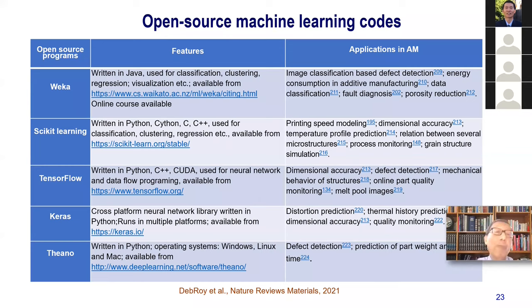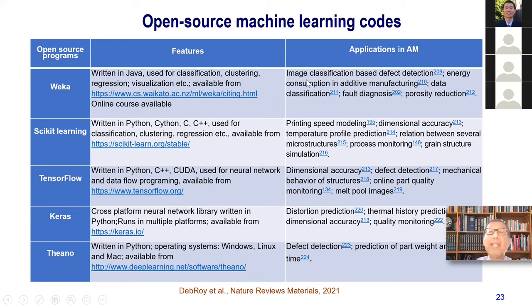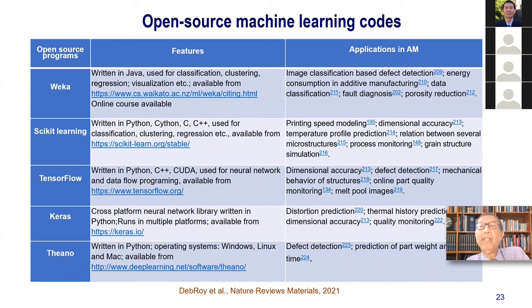There are now a whole bunch of open-source tools available — WEKA, Scikit, TensorFlow, Keras, and Theano — and we have included all the websites from where you can download these along with their utility. For example, you can do image classification for defect determination, monitor printing speed, check dimensional accuracy of additively manufactured parts, predict distortion, and predict part weight.